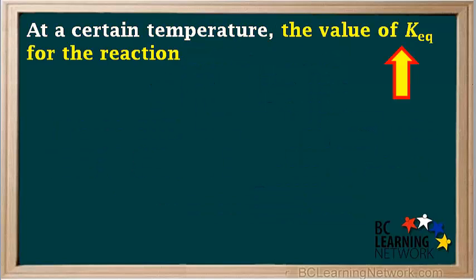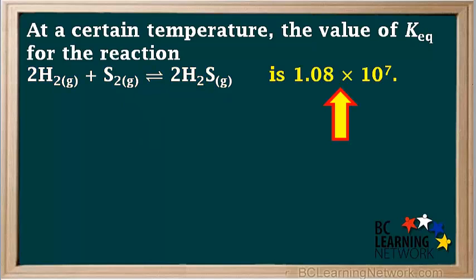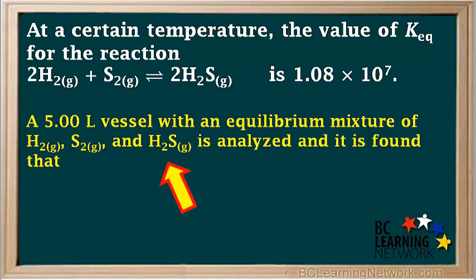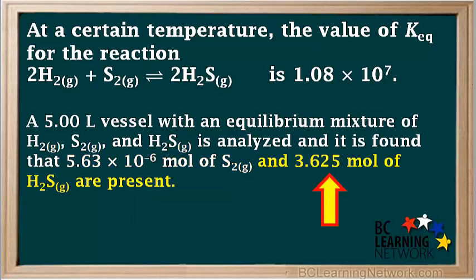At a certain temperature, the value of K_eq for the reaction 2H₂ gas plus S₂ gas gives 2H₂S gas is 1.08 times 10 to the seventh. A 5-liter vessel with an equilibrium mixture of H₂ gas, S₂ gas, and H₂S gas is analyzed, and it is found that 5.63 times 10 to the negative 6 moles of S₂ and 3.625 moles of H₂S are present.